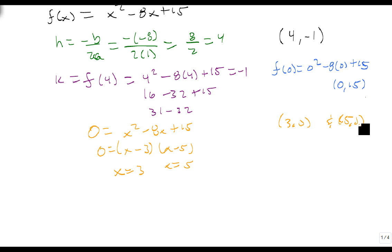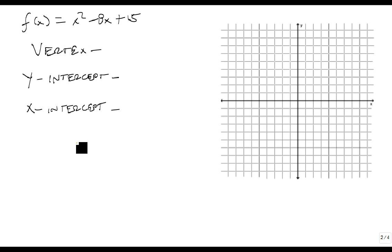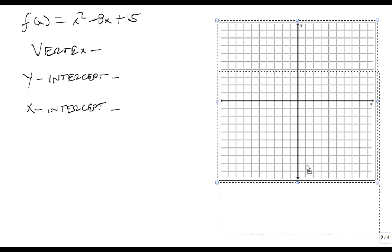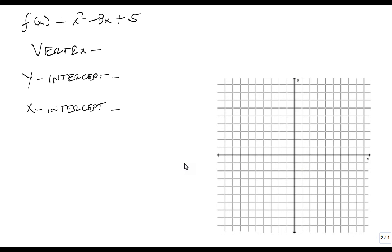So now that we have our points, we are ready to graph. And so again here's our function and our vertex. Let me move this down actually a little bit. Notice our vertex was at (4, -1), our y-intercept was at (0, 15), and our x-intercepts were at (3, 0) and (5, 0).